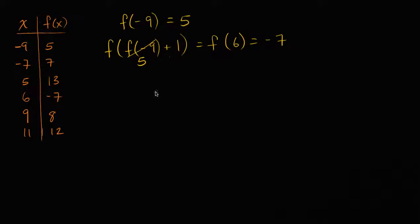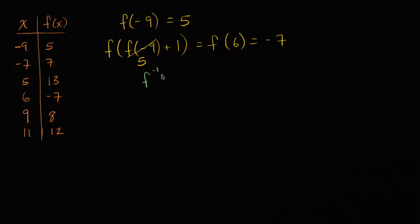But what I want to now do is start evaluating the inverse of functions. And this function f is invertible, because it's a one-to-one mapping between the x's and the f of x's — no two x's map to the same f of x. And so this is an invertible function. With that in mind, let's see if we can evaluate something like f inverse of eight. What is that going to be?